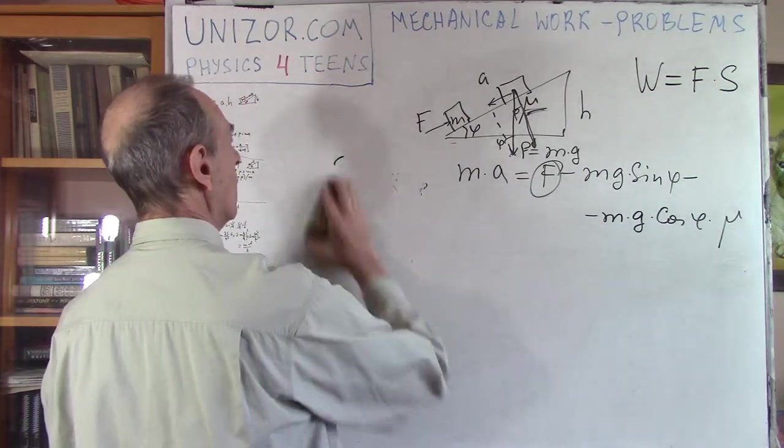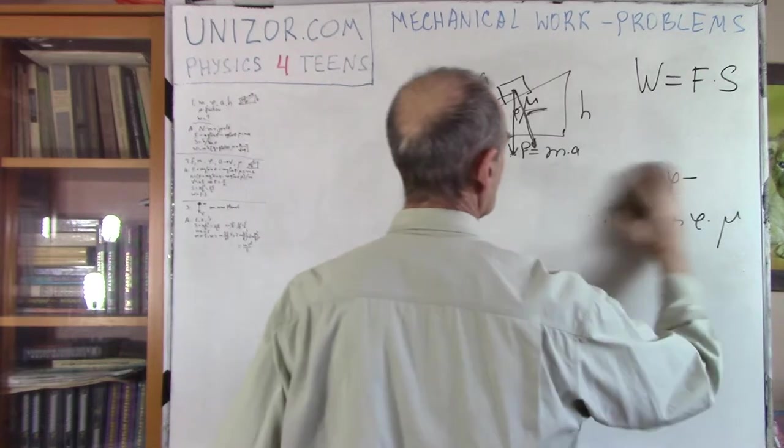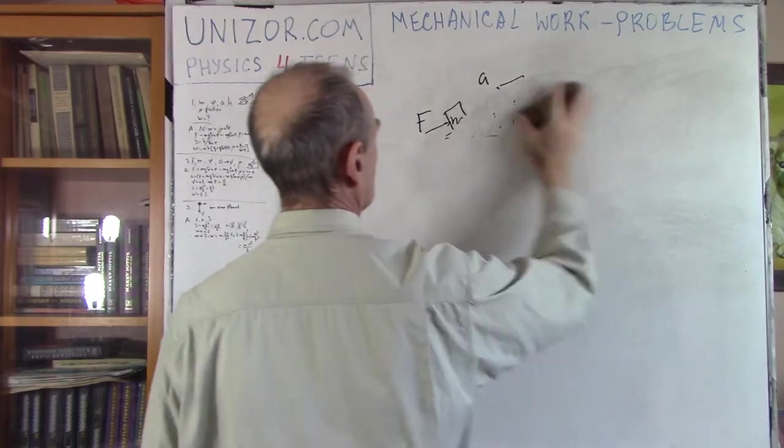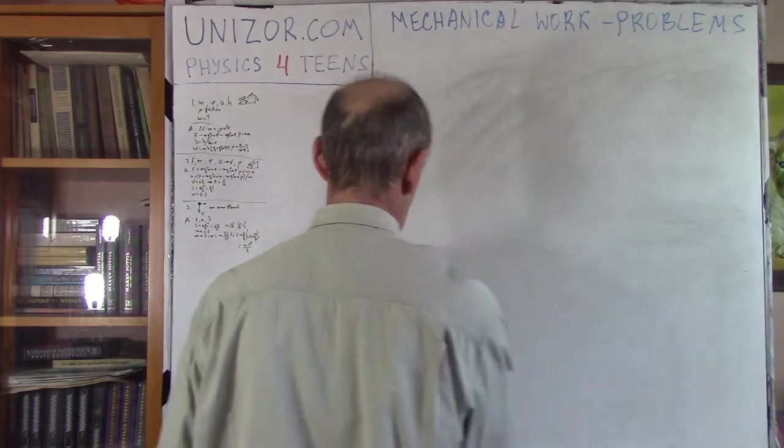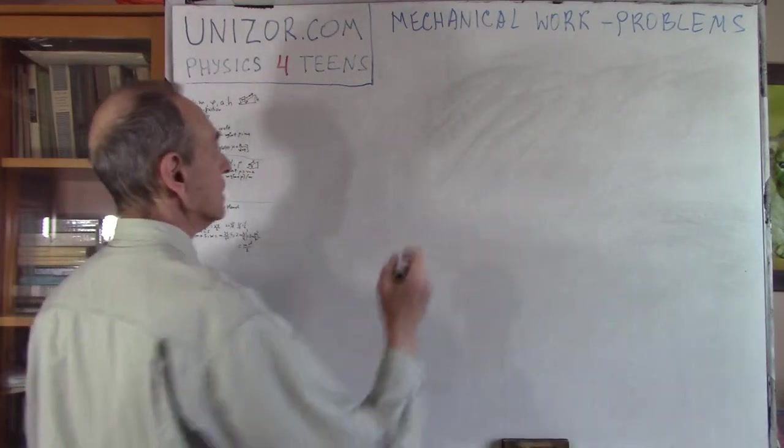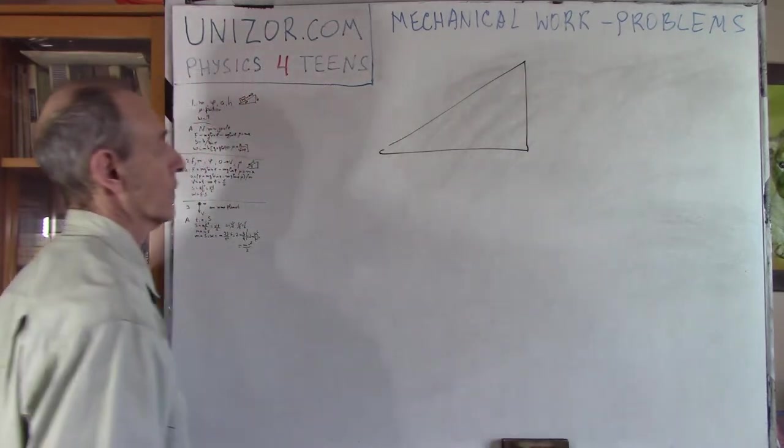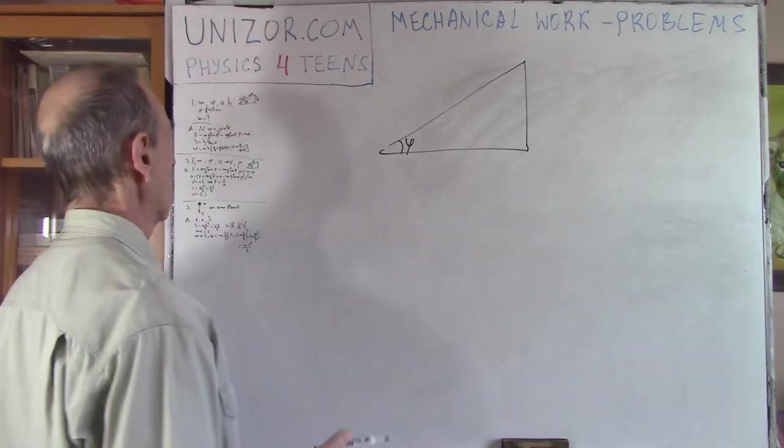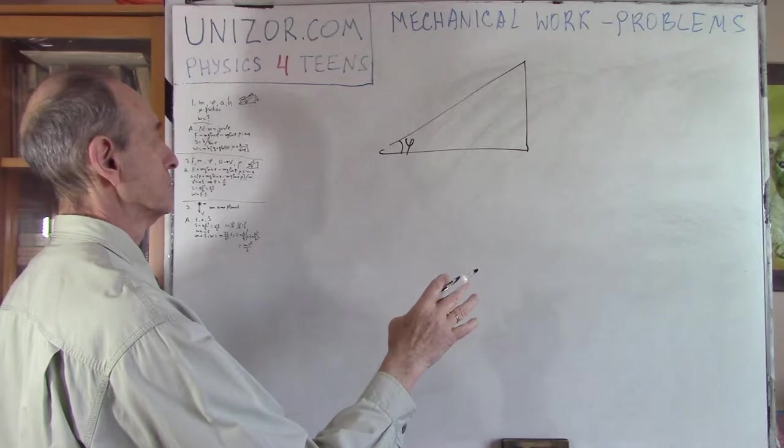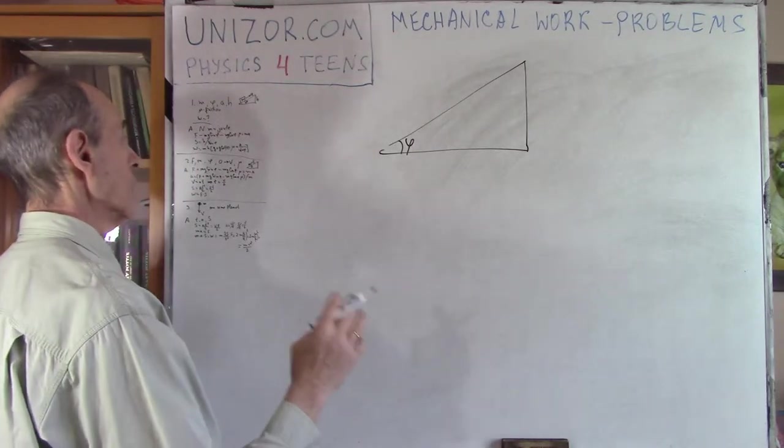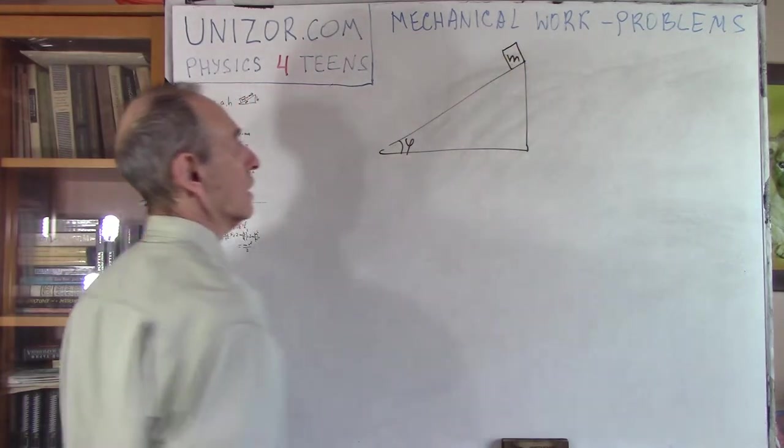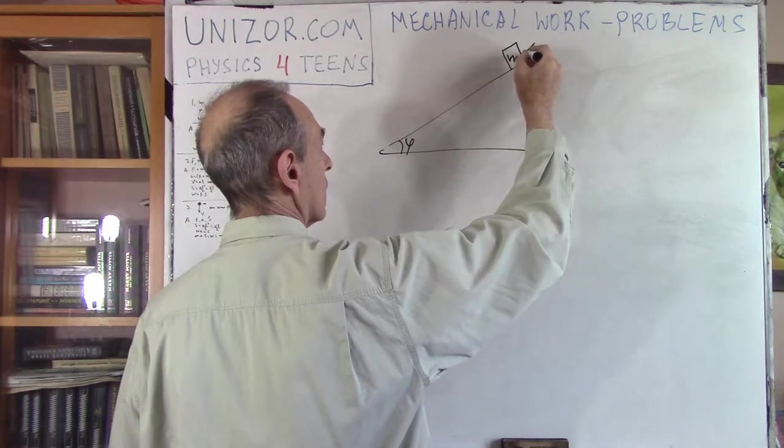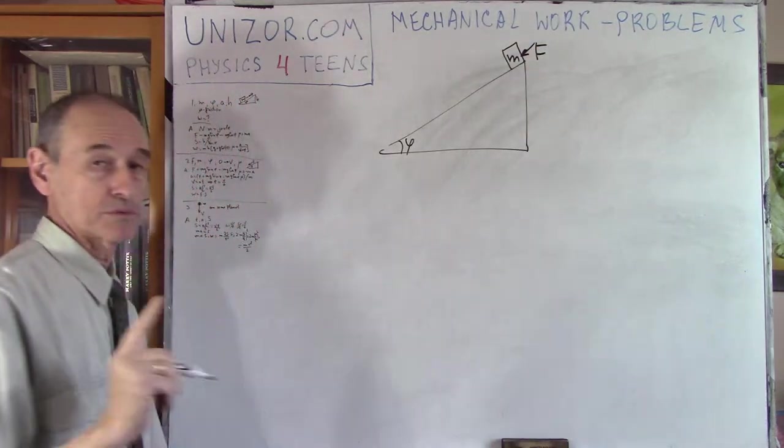Let's go to the next one, which is kind of similar. The next one is slightly different, but still similar. The same inclined with the slope, angle of slope phi. Now, I don't have the height, and I don't have acceleration. I don't know that. What I do know is that the object, which is initially at the very top of this slope, at rest, is pushed down by force f, known force f. In this case, we do know the force.